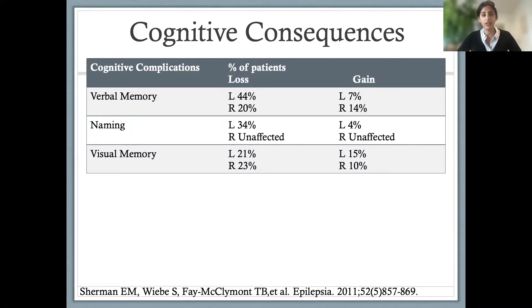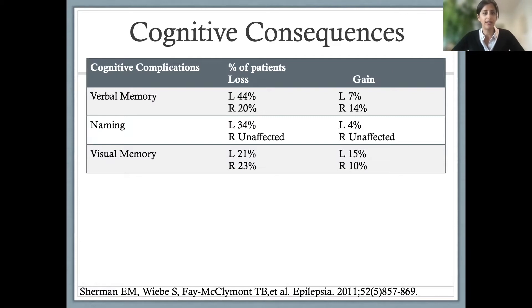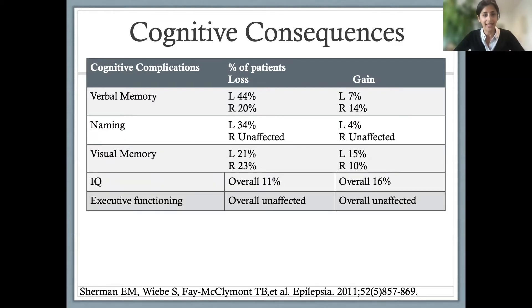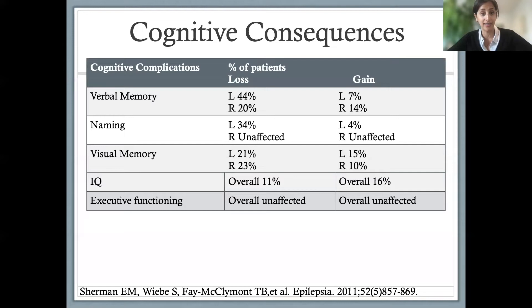We now have interesting options in neural modulation — often palliative rather than definitive — that allow us to circumvent this potential side effect. Similarly, in the dominant hemisphere we can see decreases in naming, and usually in the non-dominant hemisphere we can see some decreases in visual memory, although it's important to note we also see gains in visual memory for treated patients. Things that don't tend to be affected include IQ and executive functioning.